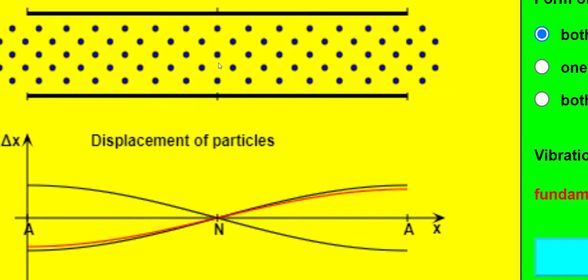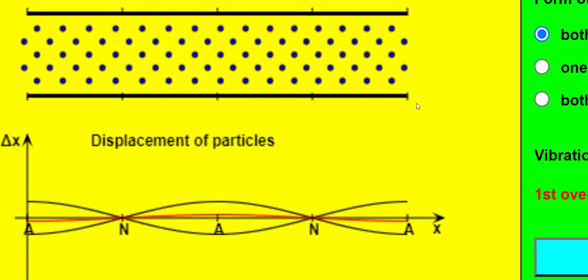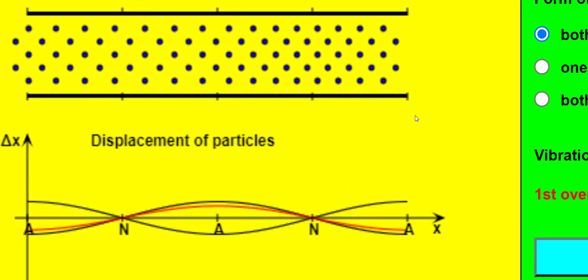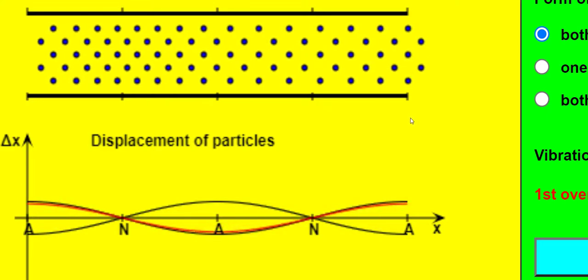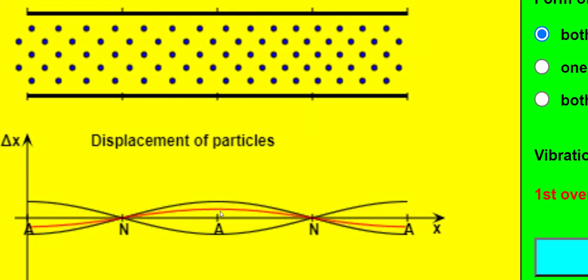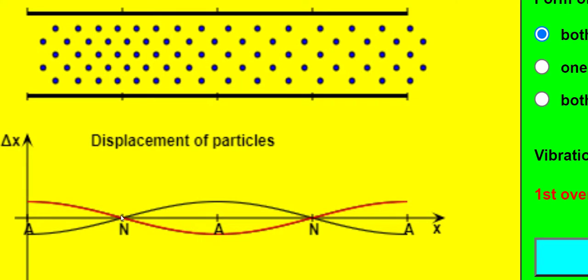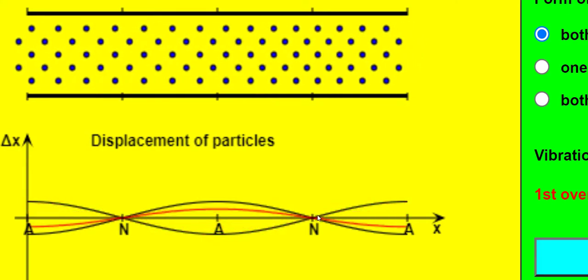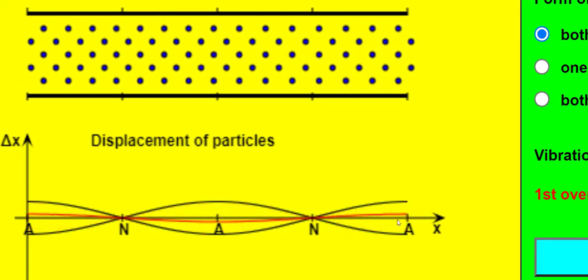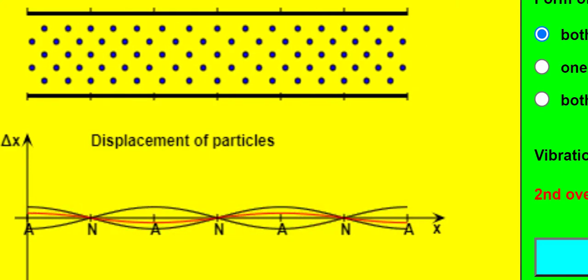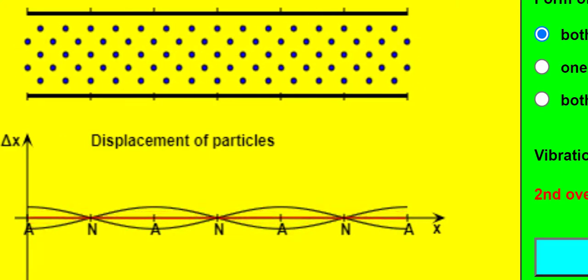The next harmonic is the second. Its frequency is twice the first harmonic frequency. There's now an anti-node at the centre and nodes a quarter and three quarters of the way along the tube. The third harmonic looks like this, while the fourth harmonic looks like this.